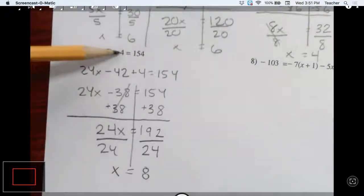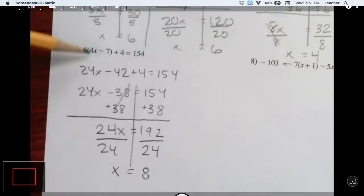Like I said, right at the beginning, you could have subtracted 4 and had this be 150. Then you could have divided by 6, and then you end up with 4x minus 7 equals 150 divided by 6, which is 25. And you could have solved it that way.